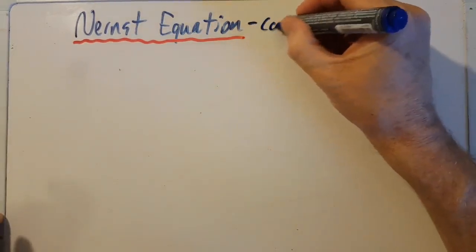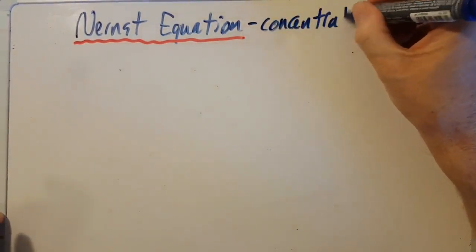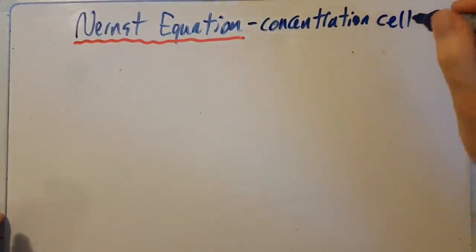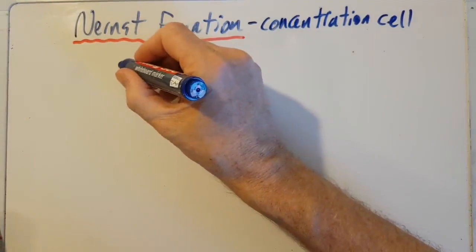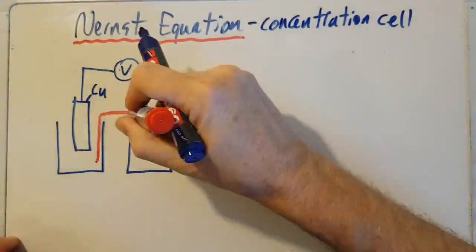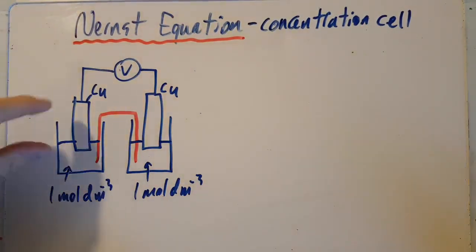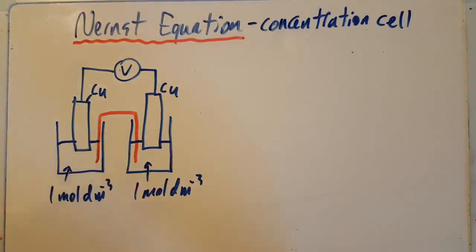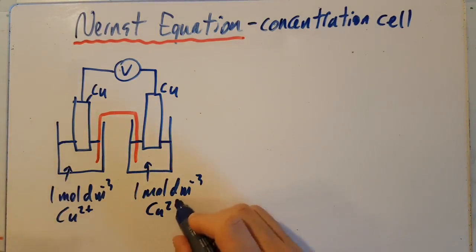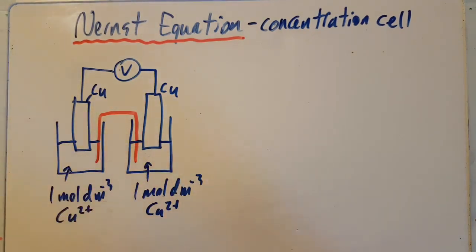So let's look at something called a concentration cell. Let's think of probably the most useless voltaic cell you could have. That's not going to do diddly, is it? This half cell and that half cell. Oh, let's assume it's copper 2+. This half cell and that half cell have the same standard electrode potential, so that means that there's going to be no voltage there.